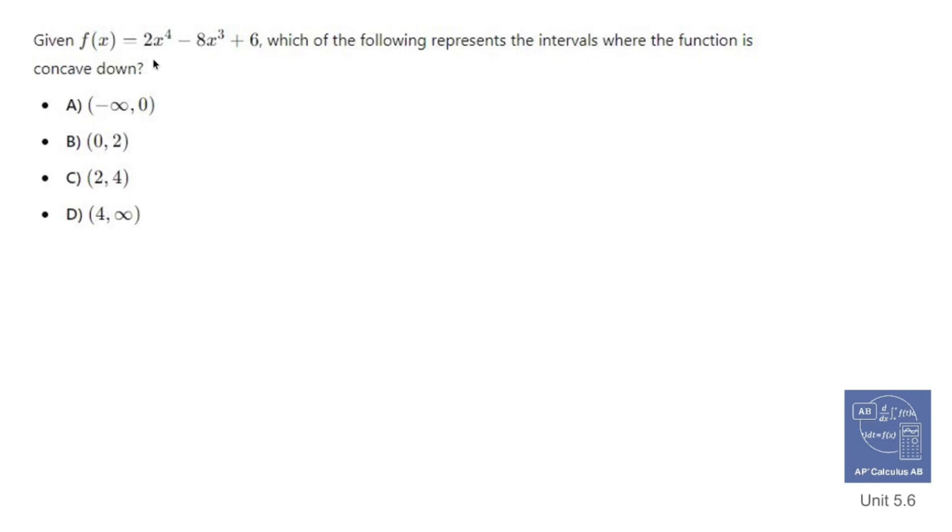Given f(x) equals 2x to the 4th minus 8x cubed plus 6, which of the following represents the intervals where the function is concave down? Well, in order to find out where something is concave down, you take the second derivative and find out where the second derivative is negative.